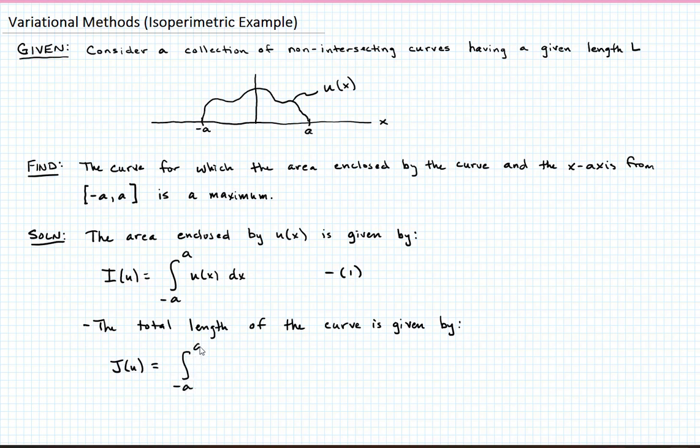So j of u, again, is the integral from negative a to a, and if you remember back when we went through how to compute the length along a curve, we ended up with the quantity 1 plus u prime squared to the 1 half dx. And that's going to have to equal a constant L. That's equation 2. If you don't remember how we got that, just go back to back quite a few lectures where we did the example problem of proving that the shortest distance between two paths is a straight line. That's where we derived that.